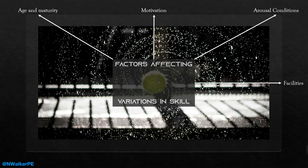Next is facilities and equipment — this concerns where the sport is taking place. As elite performers develop and work with professional clubs, the facilities tend to get better. However, we know that players like Neymar and Lionel Messi started playing football on the streets in Brazil and Argentina, without the best equipment. This shows it doesn't necessarily affect skill learning drastically, but as performers climb the ladder and get better, the facilities available to them tend to improve as well.